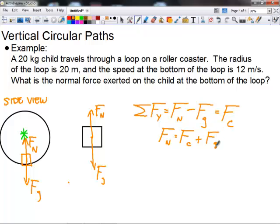Which makes sense. If you've ever ridden a roller coaster before, you know that you feel heavier at the bottom of the roller coaster because you're being pushed down into the seat. So we go ahead and substitute in. We'll say Fn equals mv squared over r. So 20 kilograms times v squared, which is 12 meters per second, over the radius of the loop, which is 20 meters, plus Fg, which is 20 kilograms, times g.